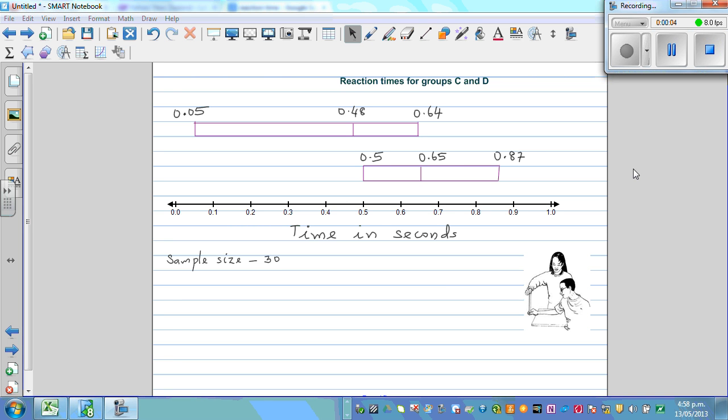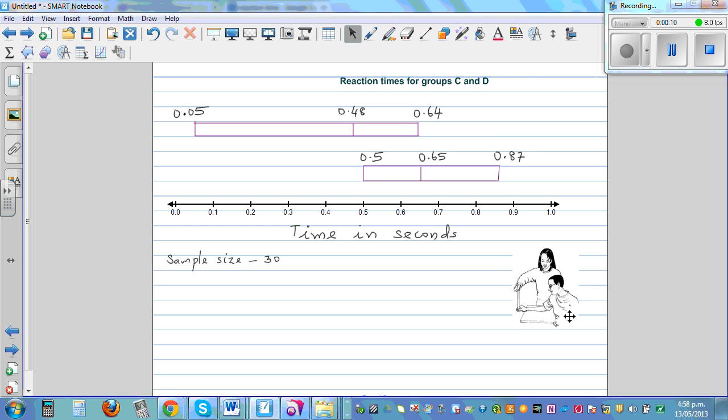Let's look at these two box plots of reaction time for Groups C and D. Now what is reaction time? Basically what you do is you drop a ruler. This is a person dropping the ruler, and this is a person who catches the ruler.